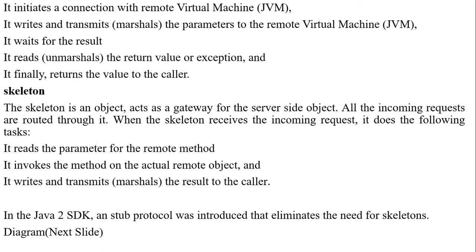When the skeleton receives the incoming request, it does the following tasks: it reads the parameters for the remote method, it invokes the method on the actual remote object, and it writes and transmits the result back to the caller.